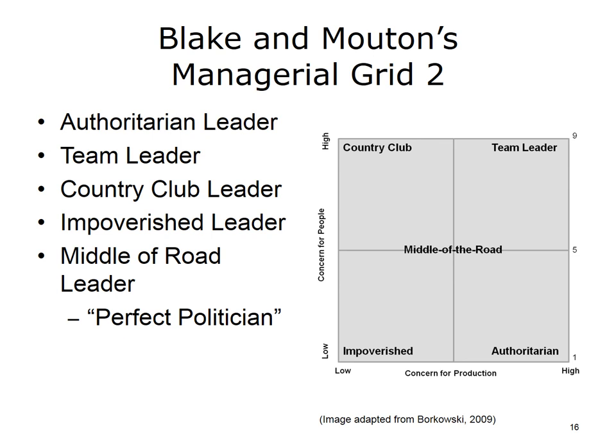If we look in the very center of the grid, we notice that there is an area of 5,5 — meaning 5 on production and 5 on people. We refer to this type of leader as a middle-of-the-road leader. The individual who demonstrates this leadership style will balance the concern for task and the concern for people in a fashion that improves morale, productivity, and increases satisfaction among the group members. This type of leader will often be viewed as the perfect politician for their ability to adapt to the various situational factors that may be encountered.